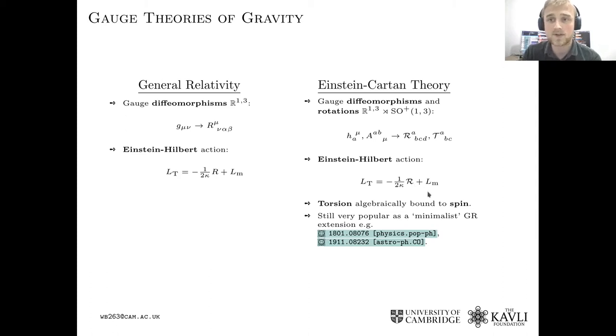And a particular problem with this is that the torsion is algebraically bound to fermionic spin sources. This is quite unnatural, but nonetheless, Einstein-Kartan theory is a very popular minimal alternative to general relativity.